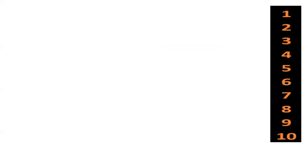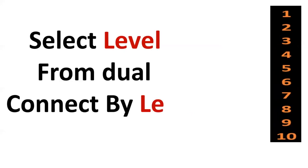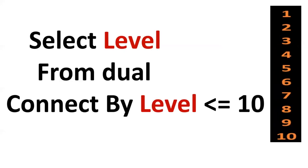Now the concepts are clear, and we can start the number patterns. The first one is to print 1 to 10 numbers. This can be achieved by using CONNECT BY LEVEL less than or equal to 10. If you want up to 100, put less than or equal to 100.